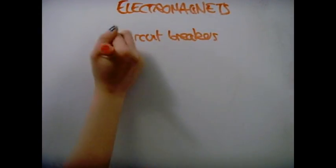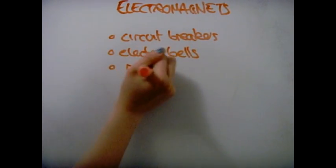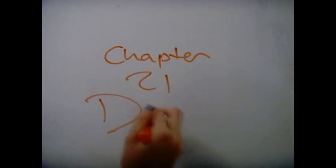Electromagnetism is used in circuit breakers, relay switches, and electric bells. Chapter 21 Done!